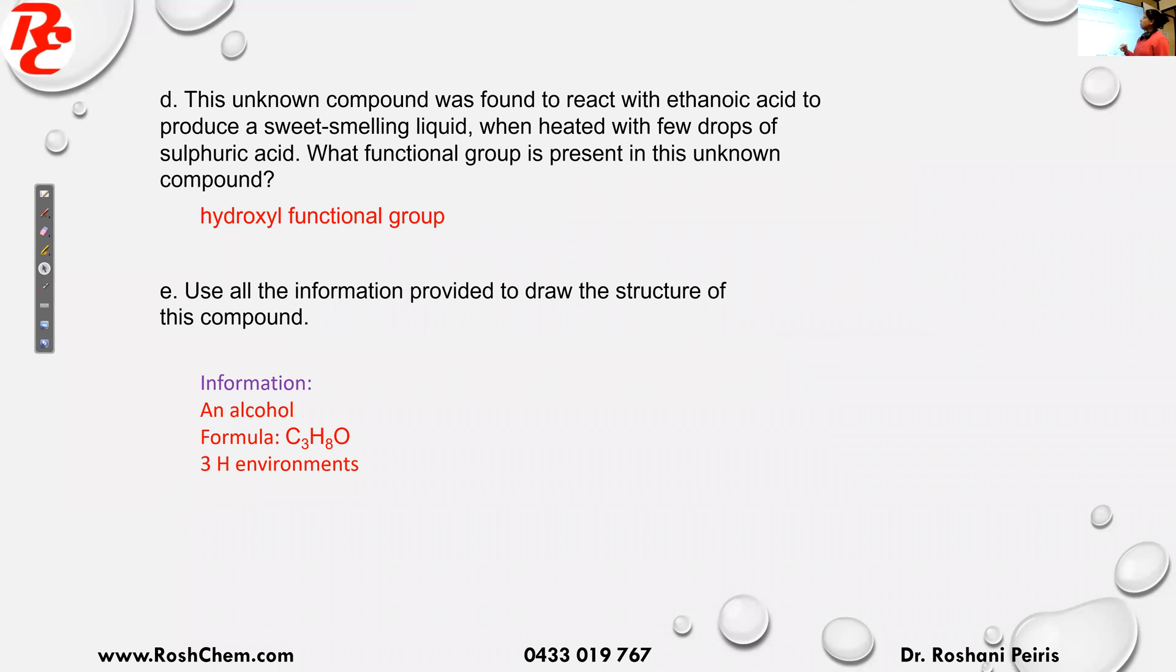So this unknown compound was found to react with ethanoic acid to produce a sweet smelling liquid when heated with few drops of sulfuric acid. What functional group is present in this unknown compound? So when you read this reaction here, you can see it's esterification. You have something reacting with ethanoic acid, that's carboxylic acid. It's giving you sweet smelling liquid and the catalyst you can see is sulfuric acid.